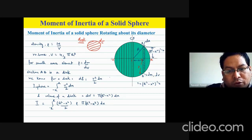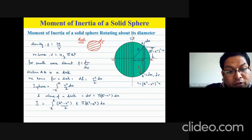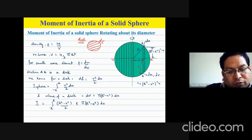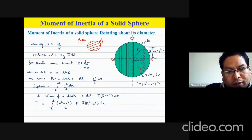Instead of r², we plug in (R² − x²), so the integral becomes ∫(R² − x²)/2 × ρπ dx from −R to R. Rho is constant, so we substitute ρ = m/(4/3 πR³), giving 3m/(4πR³). A factor of π and a factor of 1/2 come out of the integral.